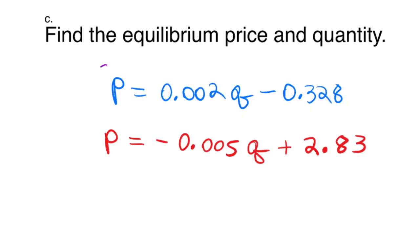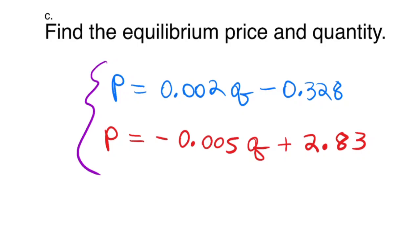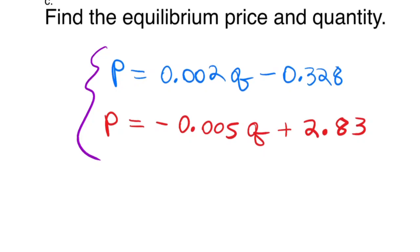What we're doing here is we are going to have to find the intersection of these two linear equations. We can either use substitution or elimination, a.k.a. addition. Given the fact that both of these equations are already solved for P, I'm going to use substitution.